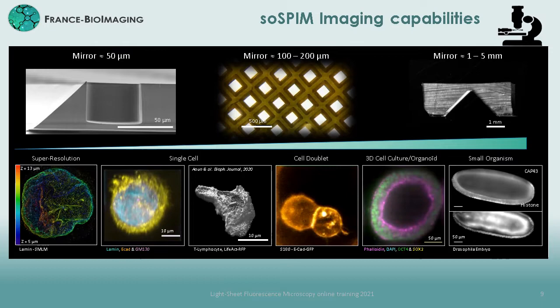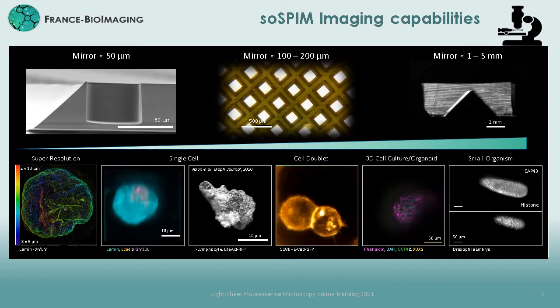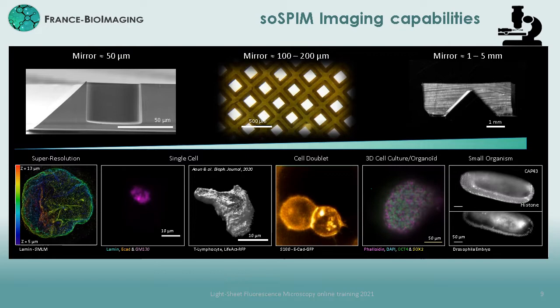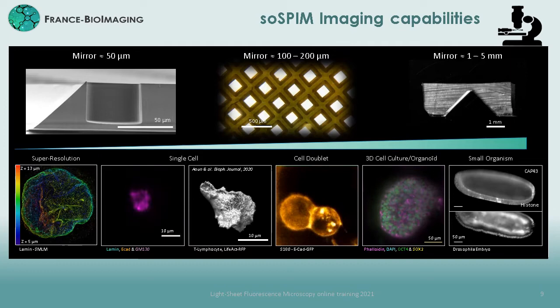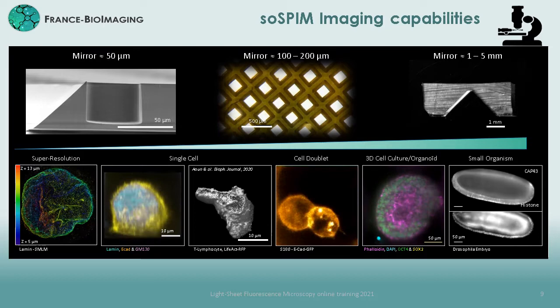Now let's look at the imaging capabilities of the SOSPIN technology. The first important feature is its capacity to image many different kinds of samples spanning a very large range of sizes, simply by adapting the mirror size and shape to the samples we want to image. Using a small mirror, we are able to image at the single-cell scale with improved 3D and live capacity, and even single-molecule sensitivity.